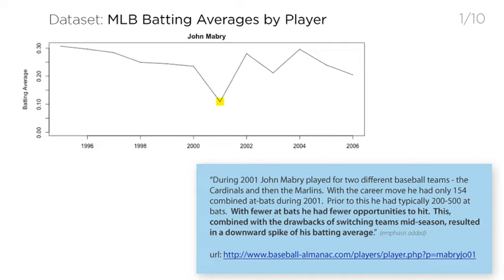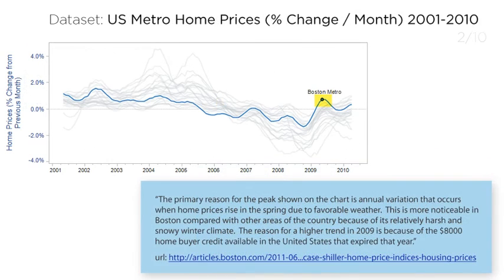We evaluated these strategies through six studies and a live deployment in which we generated 910 explanations for 64 charts from 16 different datasets. Over 60% of the responses produced high-quality explanations. Our results suggest that by using paid crowd workers rather than ad-hoc volunteers, we can reliably generate diverse, high-quality explanations that support the analysis of specific datasets. The ten example responses shown here showcase the quality and diversity of the explanations workers produced.